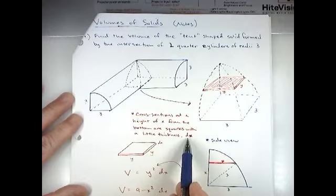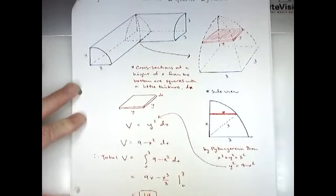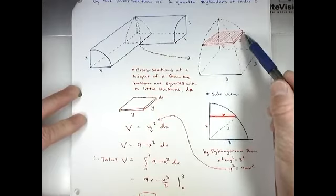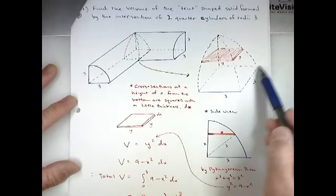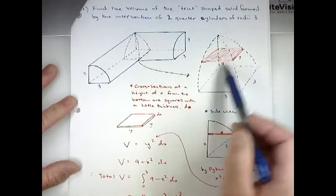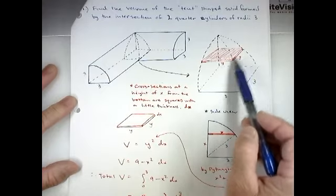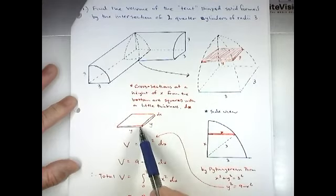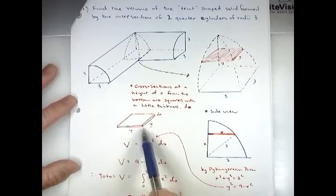The idea for finding the volume of a solid is to imagine slicing it. If you think about slicing this tent-shaped solid at different heights above the bottom — which is a square — every cross-section at a height of x from the bottom is a thin square slab with a tiny thickness dx. The volume of one square slab is y times y times dx, which is y² dx.